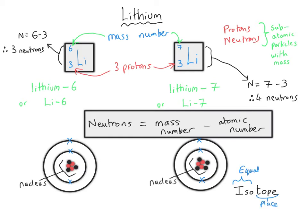This word is very descriptive, because the two isotopes of lithium are both found in the same place in the periodic table, because they've got the same number of protons. So isotope means they're in equal places — the same place in the periodic table.